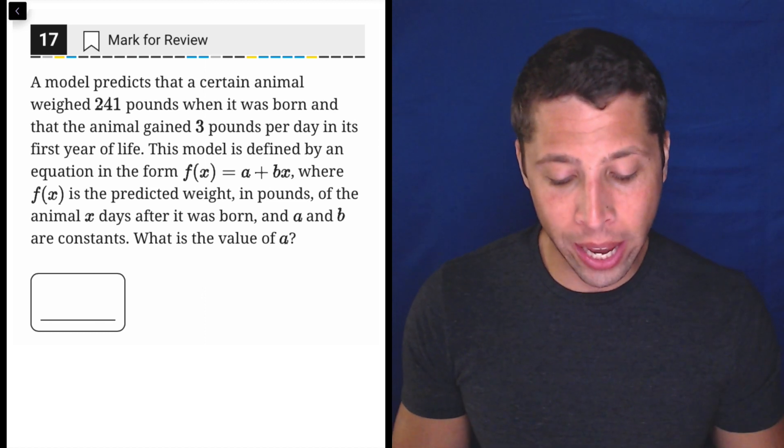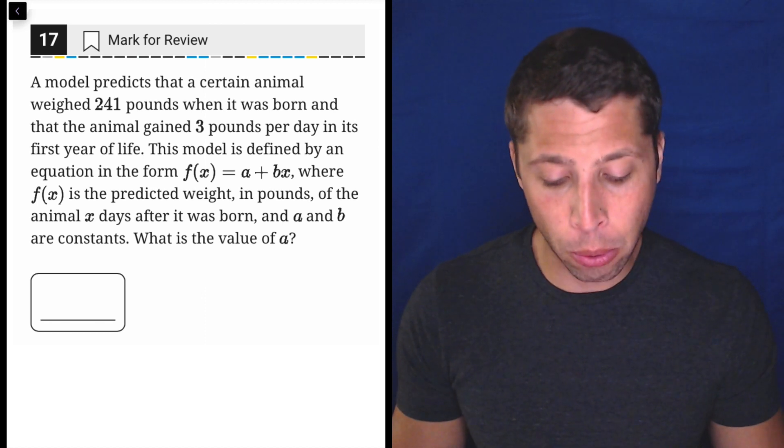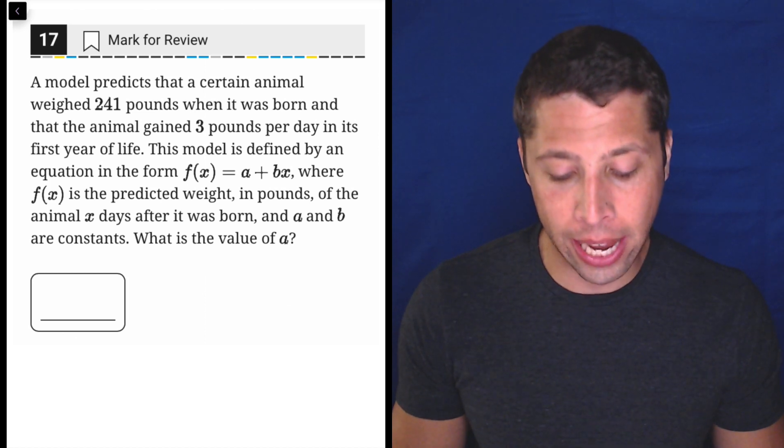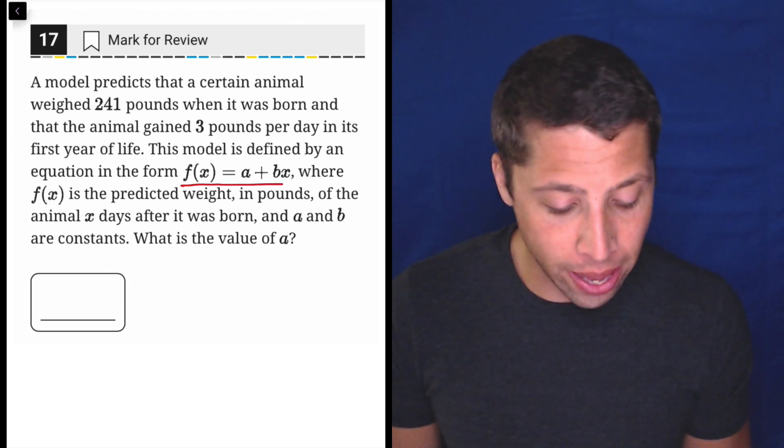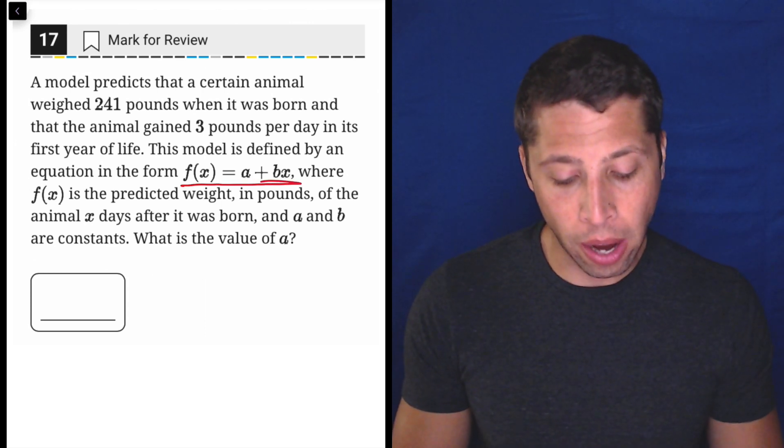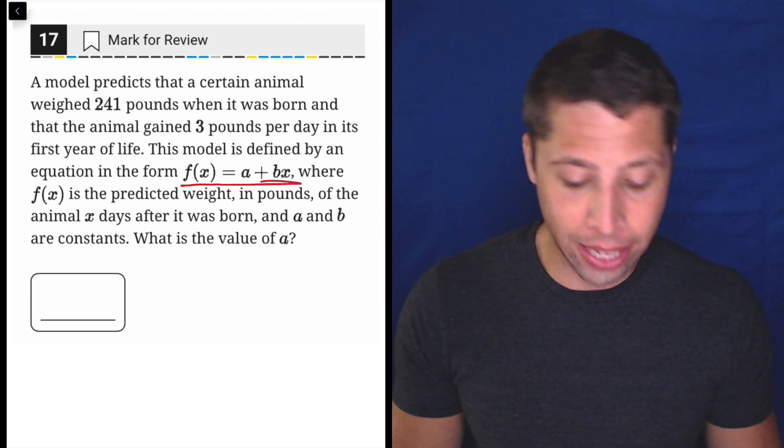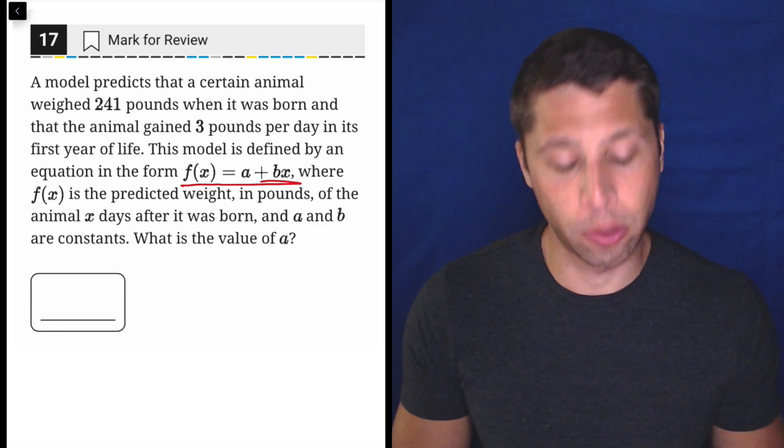A model predicts that a certain animal weighed 241 pounds when it was born and that the animal gained 3 pounds per day in its first year of life. This model is defined by an equation in the form f(x) = a + bx, where f(x) is the predicted weight in pounds of the animal x days after it was born and a and b are constants. What is the value of a?